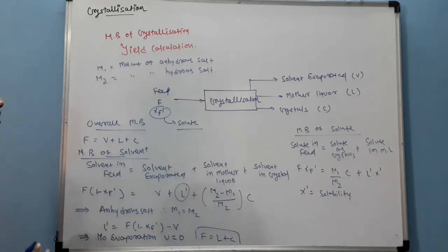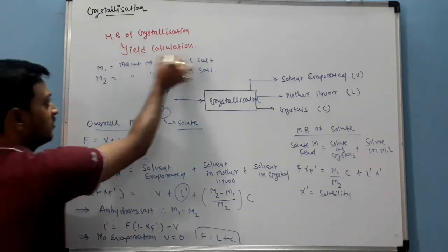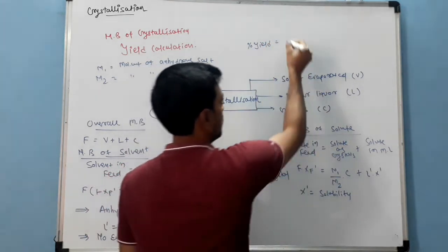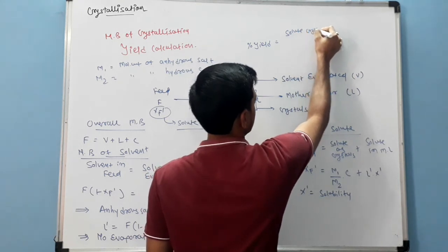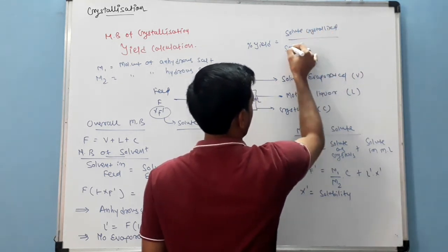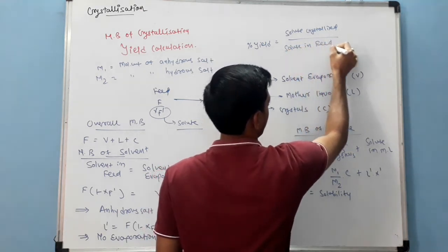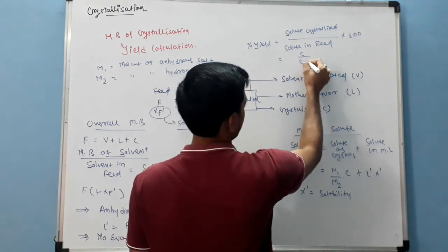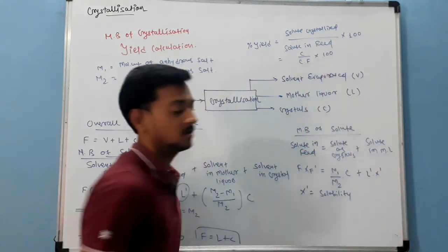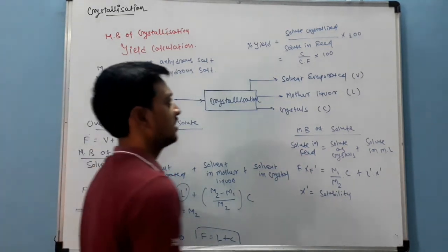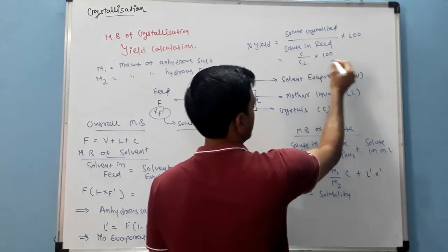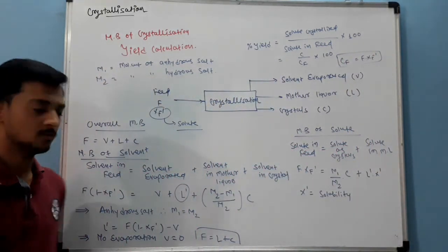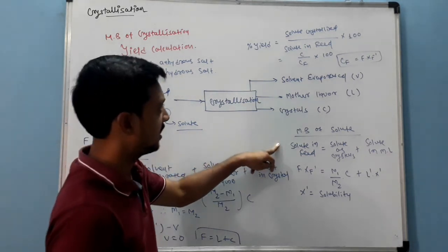This is the basic material balance of crystallization. The yield percentage L equals amount of solute crystallized divided by amount of solute in feed, multiplied by 100 — that is C divided by Cf, times 100. Where Cf equals F times xf'. So we have: solvent material balance, solute material balance, and yield. Thank you.